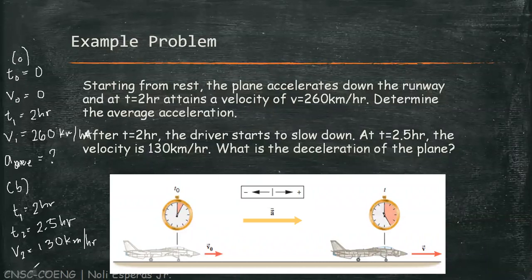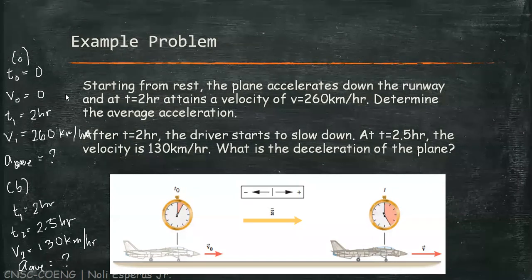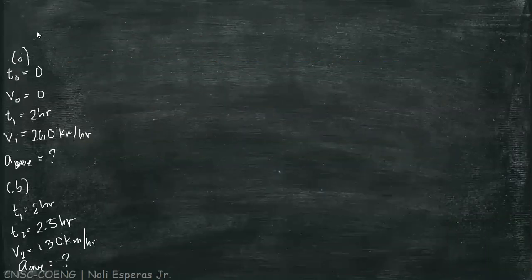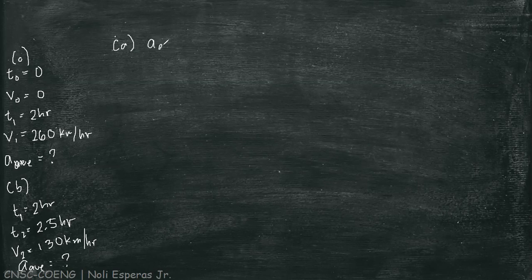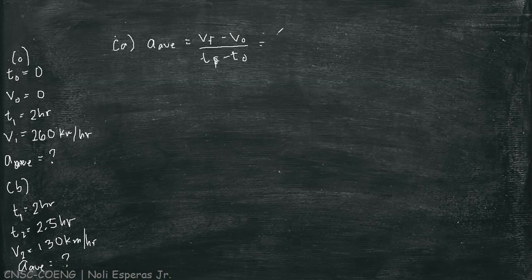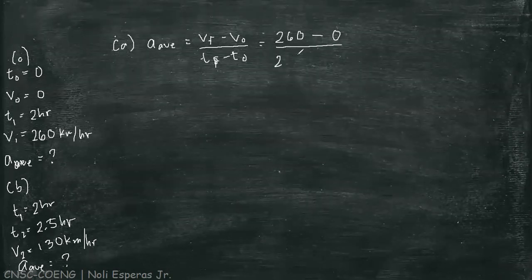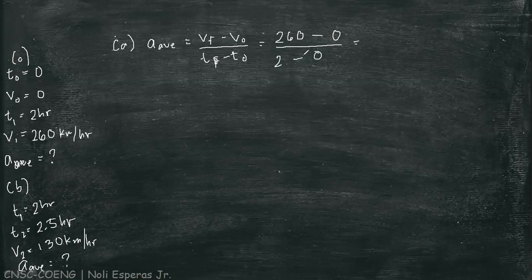We're looking for the deceleration of the plane. So, let's solve the problem. For letter A, we're looking for the average acceleration. Average acceleration equals Vf minus V-naught over Tf minus T-naught, which equals 260 kilometers per hour minus zero, over 2 hours minus zero. Therefore, our average acceleration is 130 kilometers per hour squared.